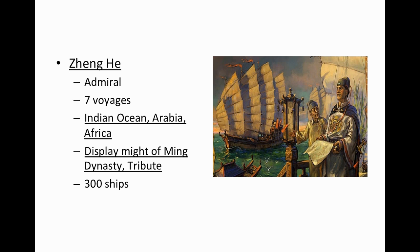Zheng He is considered the greatest Asian explorer. He made seven voyages and while he didn't go as far as Columbus or the Portuguese, he had a huge fleet — 300 ships that dwarfed Columbus's ships. A lot of his mission was to display the might of the Ming Dynasty. When he arrived in India or Arabia, he would expect tribute from the communities he visited. He didn't take over, but he did have cannons, making him an intimidating force on the coasts of Africa and Arabia.